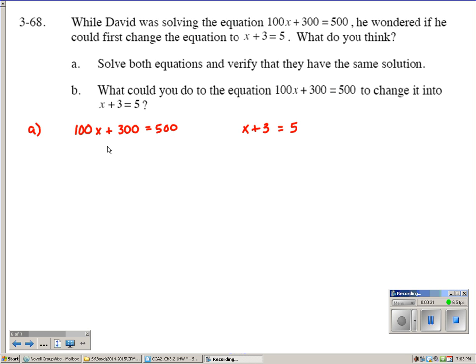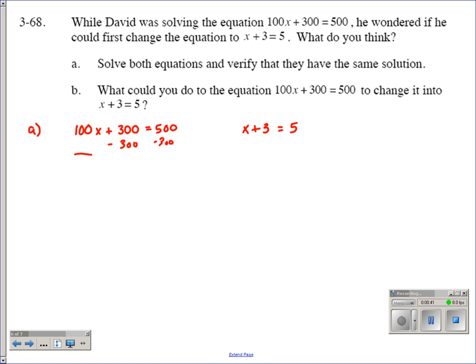So the first one, 100x plus 300 equals 500. We're just going to subtract our 300 from each side. And we get 100x equals 200. And we know that 100 times 2 should give us 200. At least where I come from it does. So x should equal 2.